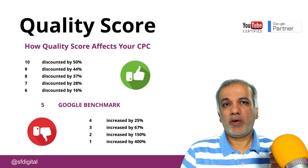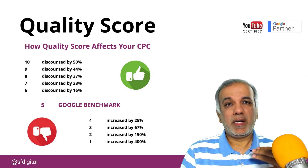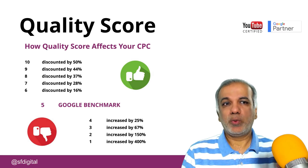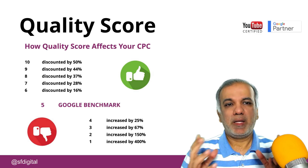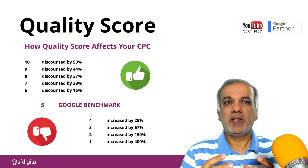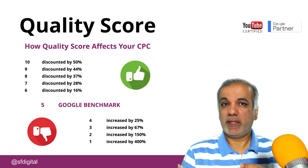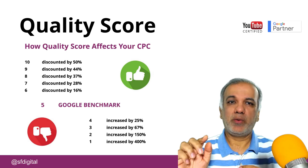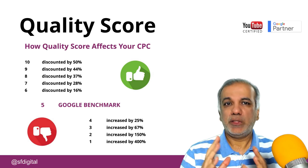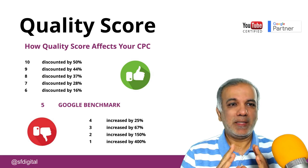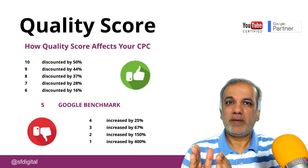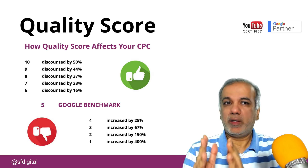Quality score is mainly dependent on three things: the relevancy of your keywords, the ads, and also the landing page experience. Between these three factors, Google calculates the quality score of that keyword. So if you are advertising for green apples, you need to make sure that your ad has got green apples on it, and when somebody clicks on your ad and goes through to your landing page, you are selling green apples and not red apples. That's what Google wants to be certain about — that the keyword, ad, and landing page are all relevant to each other.